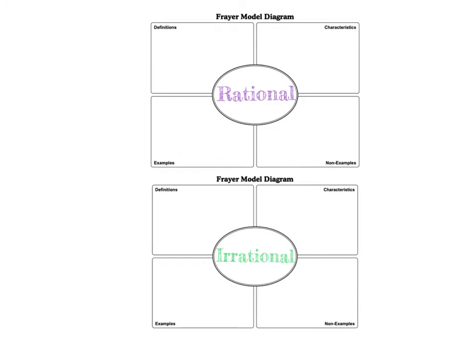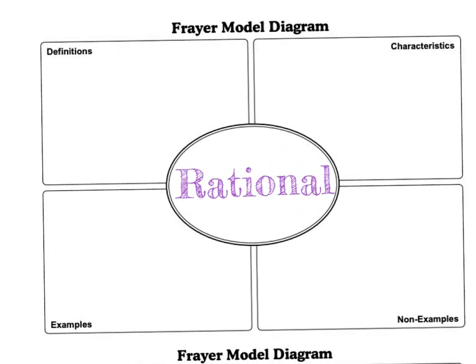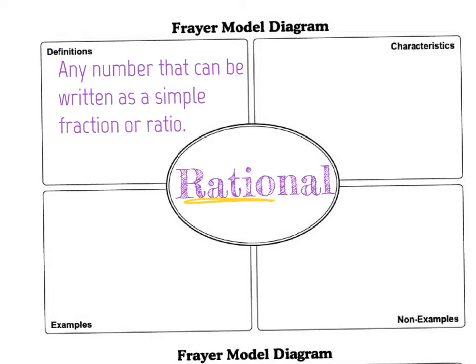Let's begin by filling in the center circle, and let's do the definition and talk about rational numbers. Did you notice by any chance the term ratio in the word rational? That kind of helps me remember what a rational number is. The definition of a rational number is any number that can be written as a simple fraction or a ratio. So if we can take a number and write it as a fraction, then it's rational.